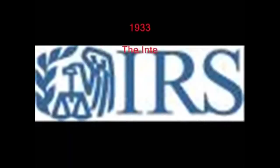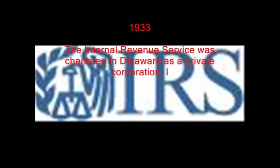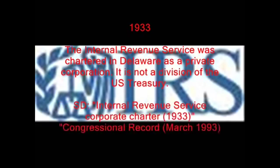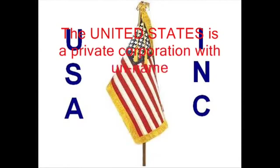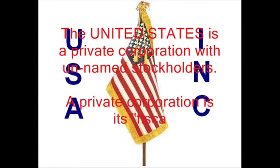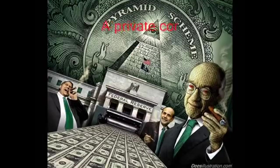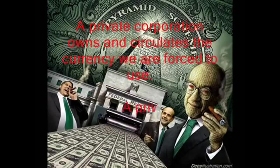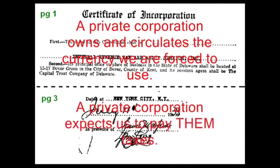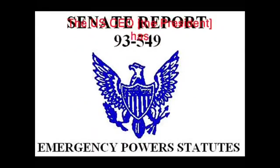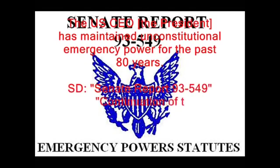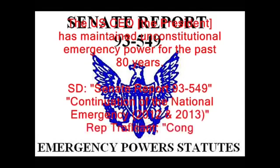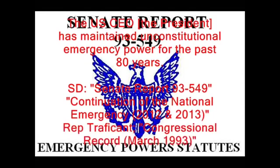1933: The Internal Revenue Service was chartered in Delaware as a private corporation. It is not a division of the U.S. Treasury. Source document: Internal Revenue Service Corporate Charter, 1933. The United States is a private corporation with unnamed stockholders. A private corporation is its fiscal agent. A private corporation owns and circulates the currency we are forced to use. A private corporation expects us to pay them taxes. The U.S. CEO, the President, has maintained unconstitutional emergency powers for the past 80 years. Source document: Senate Report 93-549 and Continuation of the National Emergency, 2012–2013.